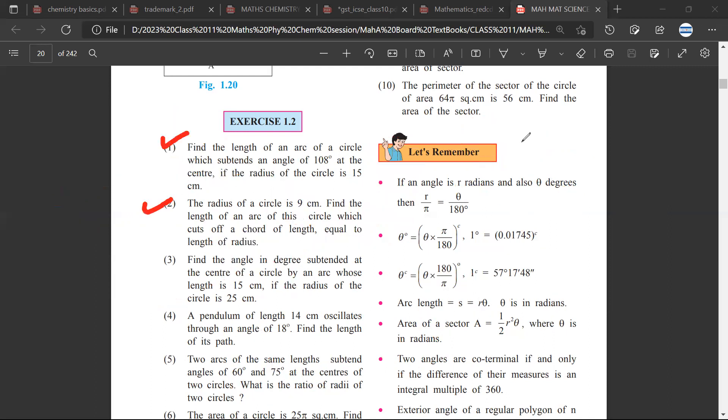Question number two: the radius of the circle is 9 centimeters. Find the length of the arc of the circle which cuts off a chord of length equal to the radius. We want to find an arc that cuts off a chord.